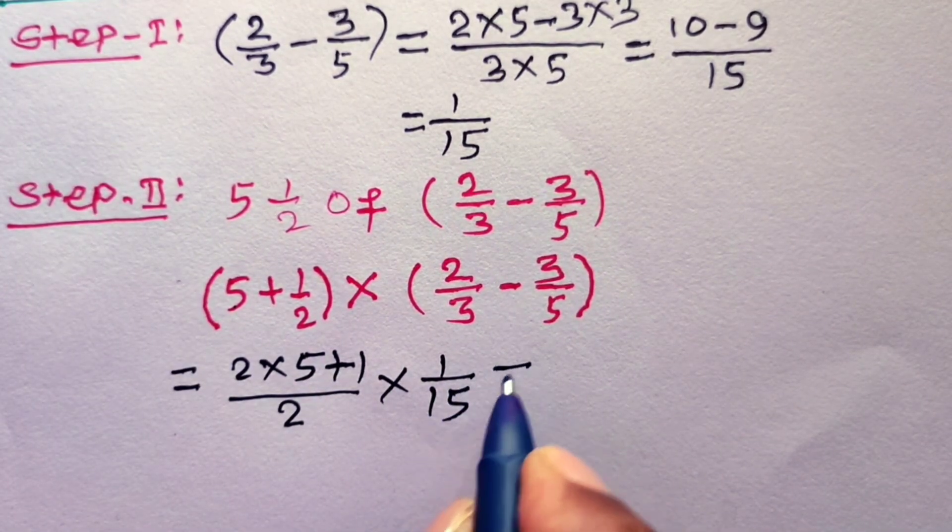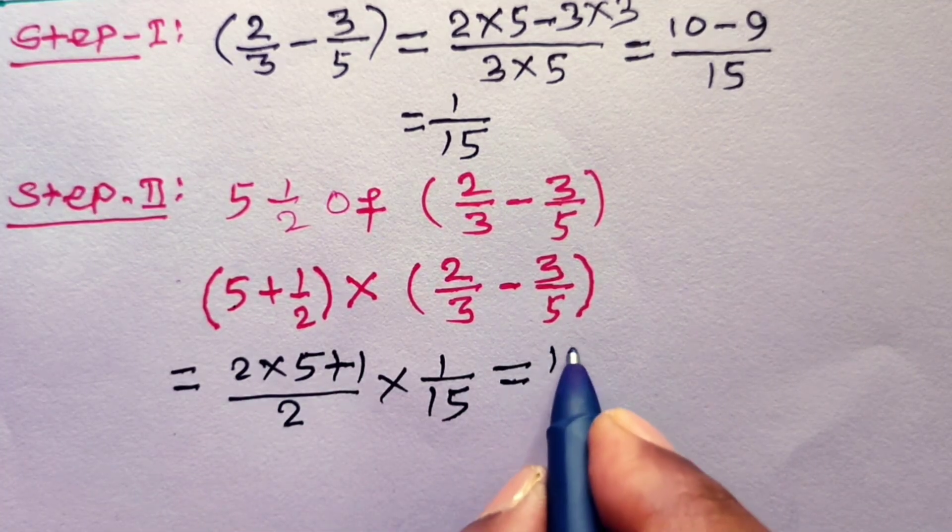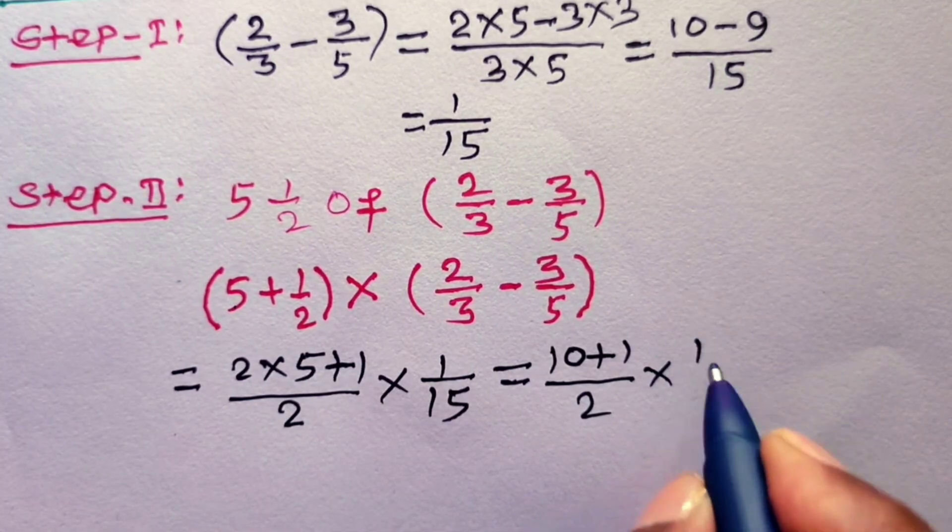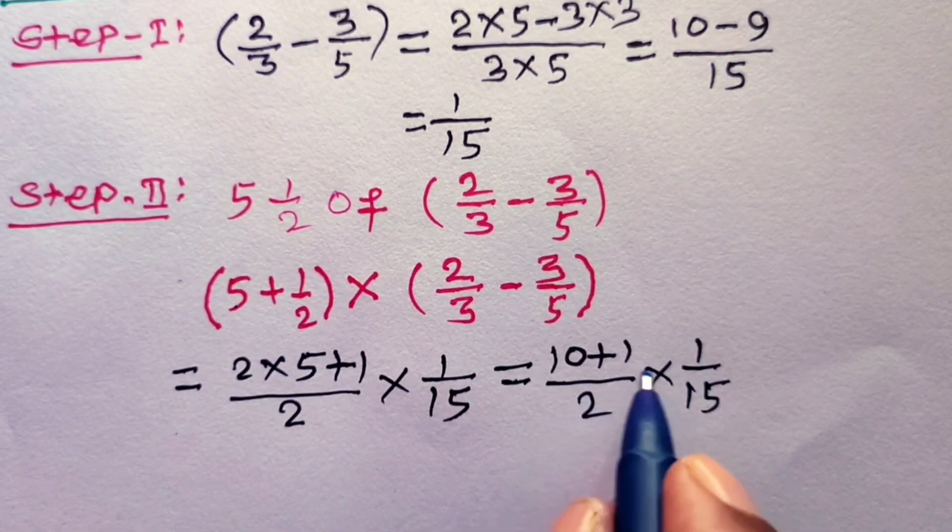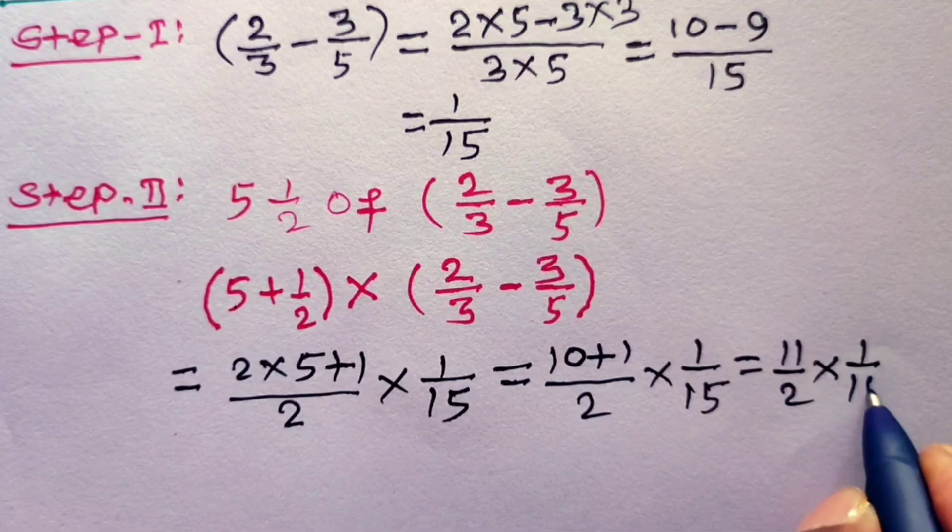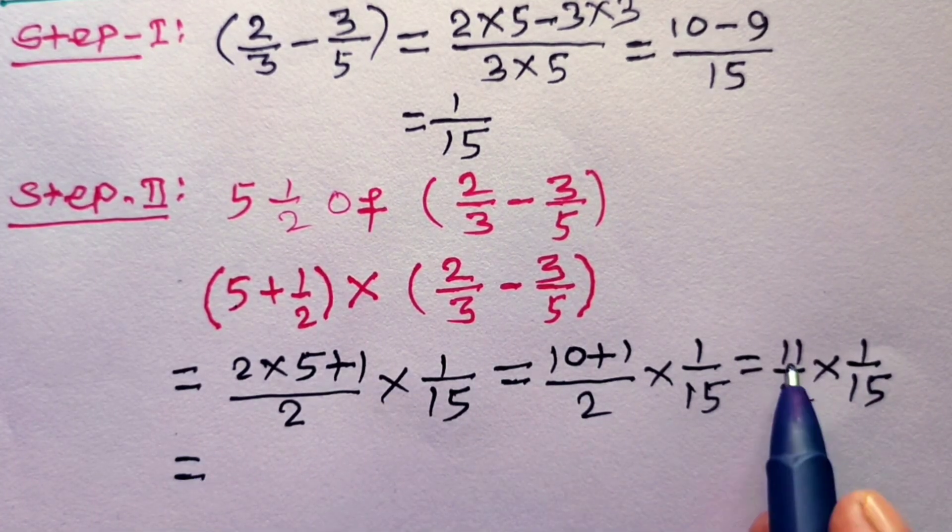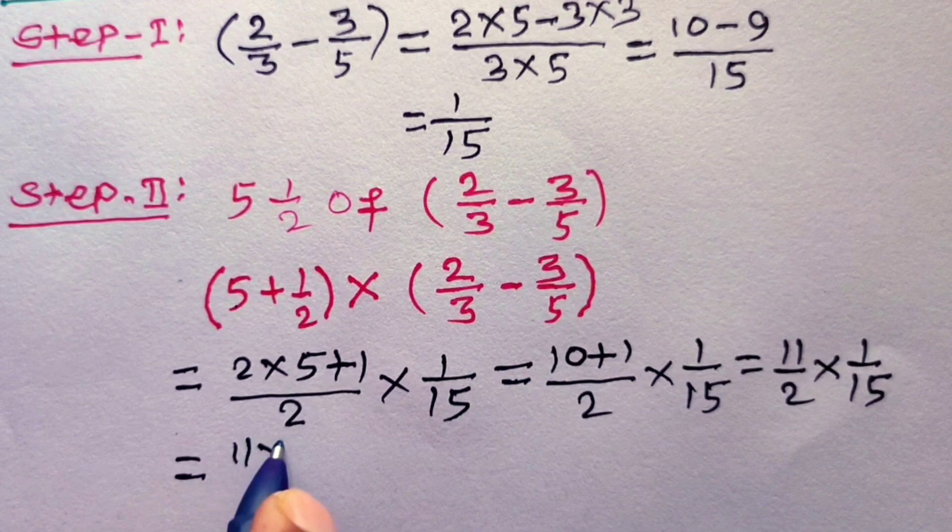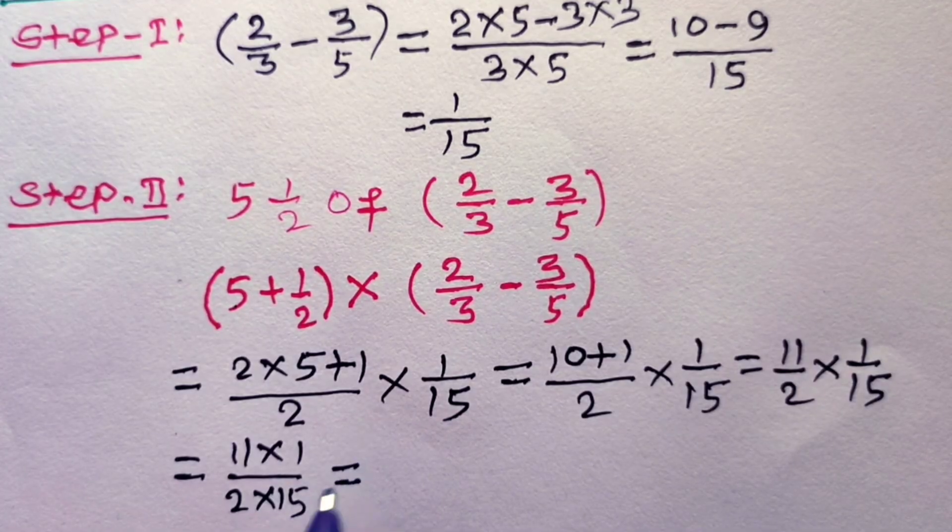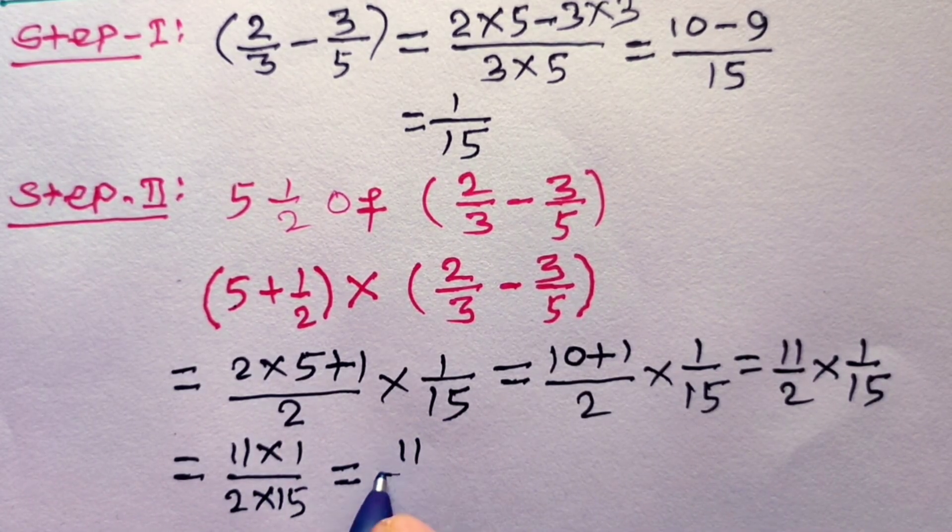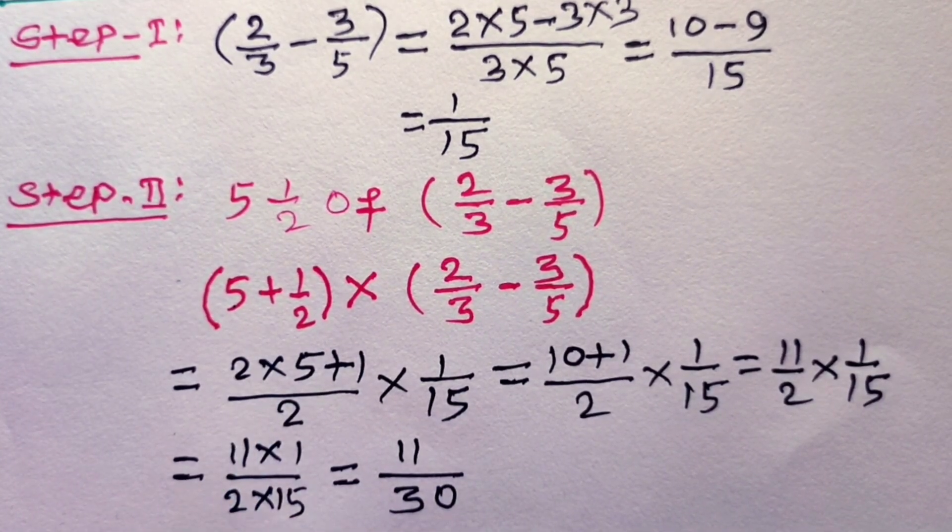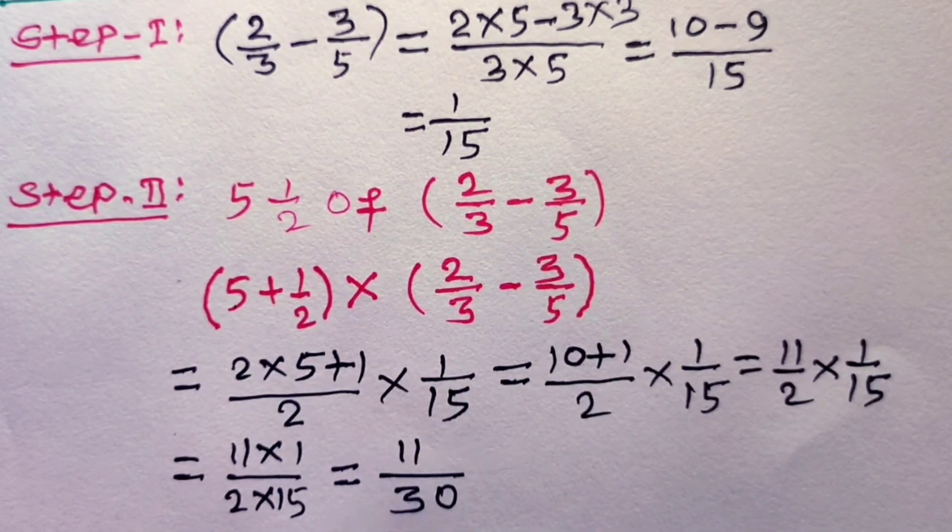Simplify this. This is equal to 2 into 5 is 10 plus 1 over 2, multiplied by 1/15. 10 plus 1 is 11 over 2, which is equal to 11 into 1 over 2 into 15. This is equal to 11 over 2 into 15, that is 30. In step number 2, we have obtained value of this is equal to 11/30.